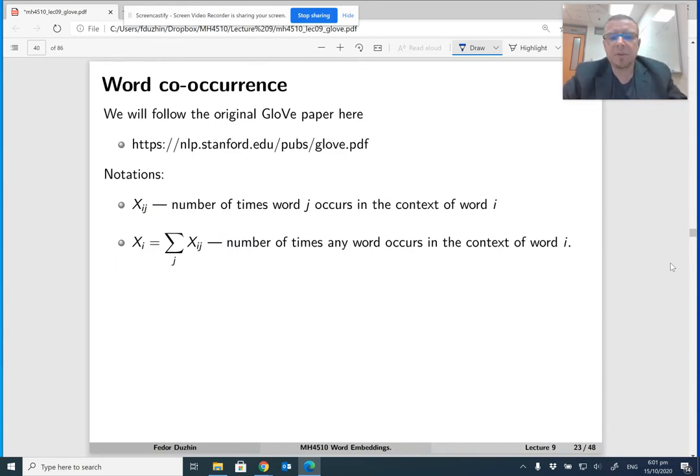Now x_i is going to be the number of times that any word occurs in the context of word i, so it's just the sum of this x_i,j overall possible j. So then if we divide x_i,j by x_i, then we get the probability that word j occurs in the context of word i.